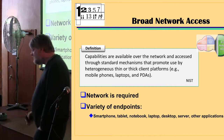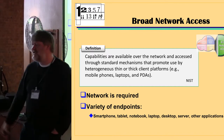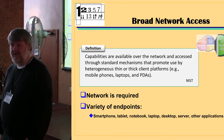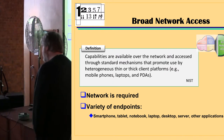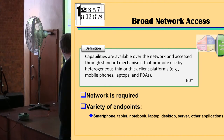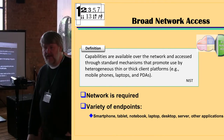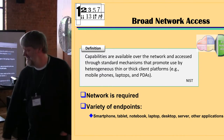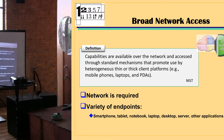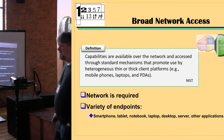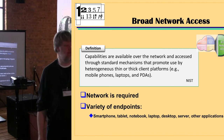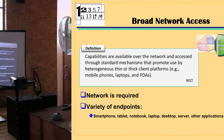Broad network access means I want to be able to consume this computing anywhere that is appropriate — anywhere appropriate for the way I want to use that resource. It doesn't have to be everything, everywhere. We've got to be able to do it on whatever endpoint you want, whether that's a smartphone, a tablet, or a laptop. These definitions I'm using are the NIST definitions, as opposed to definitions given by a particular manufacturer, so at least there's some idea of a standard across organizations.